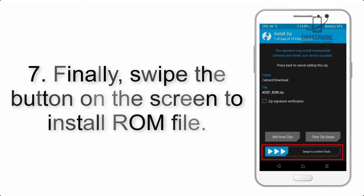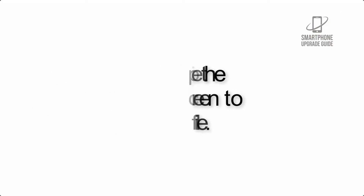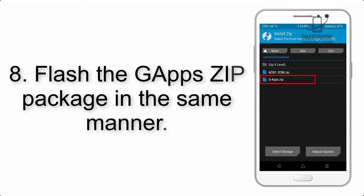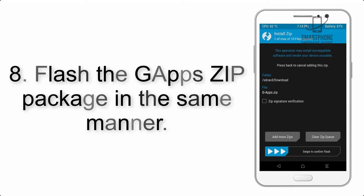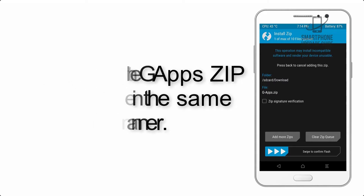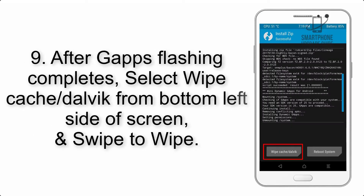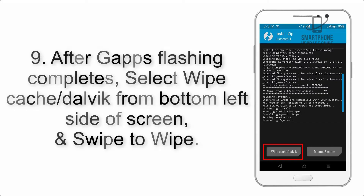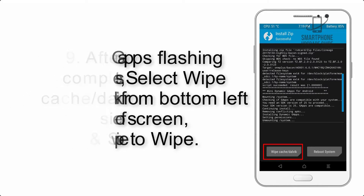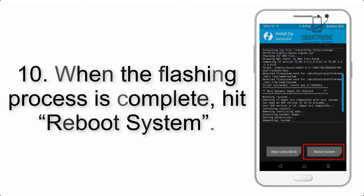Step 7: Swipe the button on the screen to install the ROM. Step 8: Flash the GApps zip package in the same manner. Step 9: After GApps flashing completes, select Wipe Cache in the bottom left side of the screen and swipe to wipe.